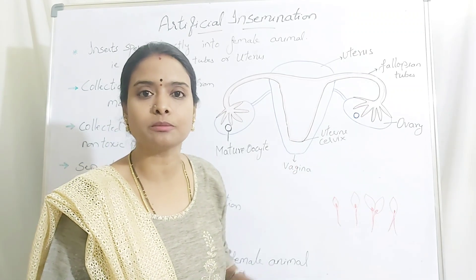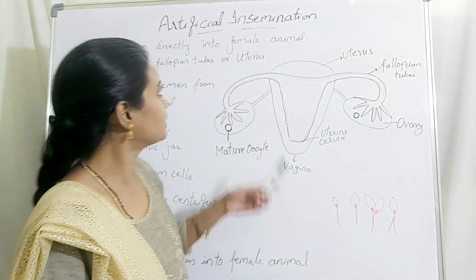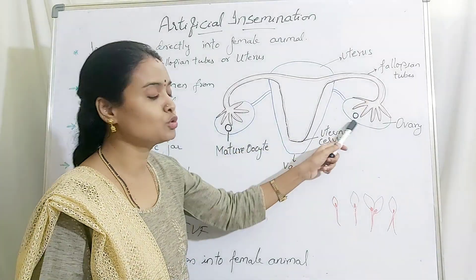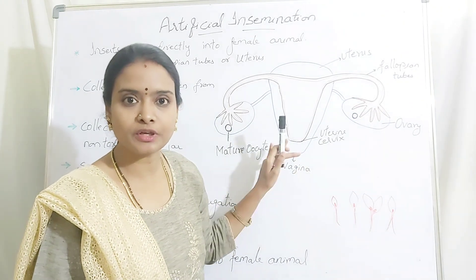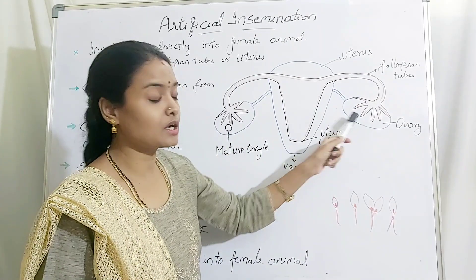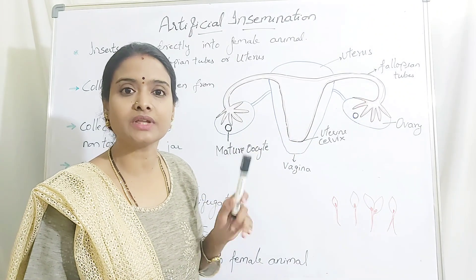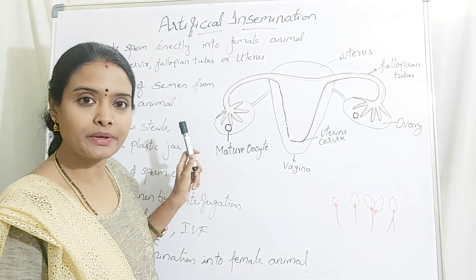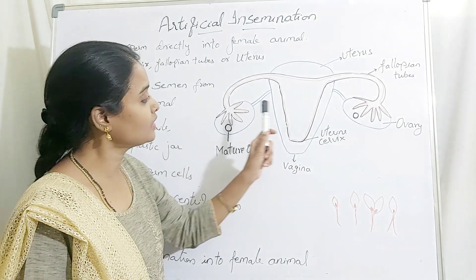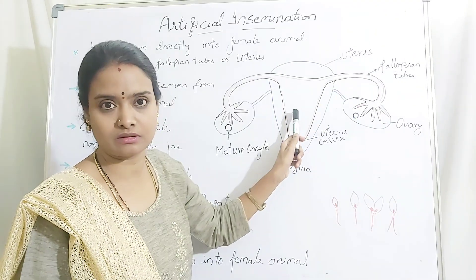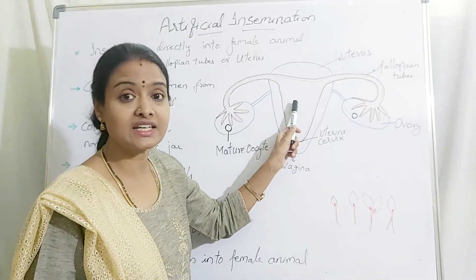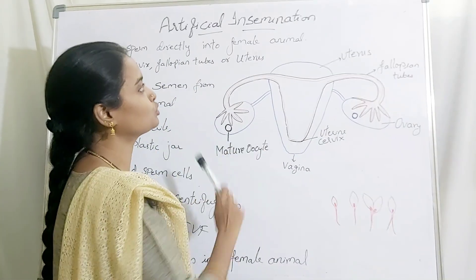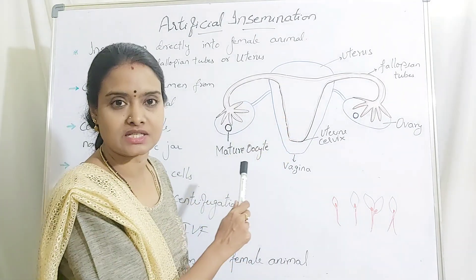What they do is collect the semen from the male animal and then carry out artificial insemination. They are not extracting the oocyte from the female — the oocytes remain inside the body. Only the sperm is taken out, collected from the semen, separated, and then injected into the female animal. So the fertilization is occurring inside the body.